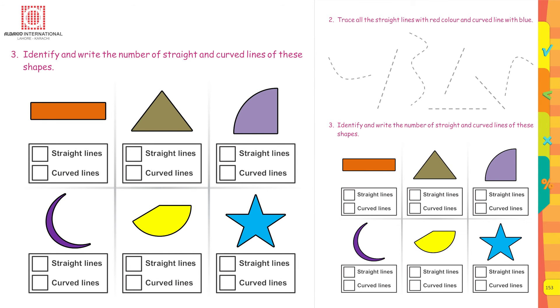Identify and write the number of straight and curved lines of these shapes. In the first one, how many straight lines are there? Let's count: 1, 2...